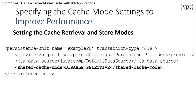To specify the cache mode settings and improve performance, adjust the cache mode settings for the persistence unit by specifying one of the cache modes as the value of the shared-cache-mode element in the persistence.xml deployment descriptor. The options are: all, none, enable selective, or disable selective.